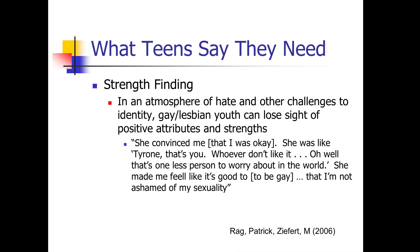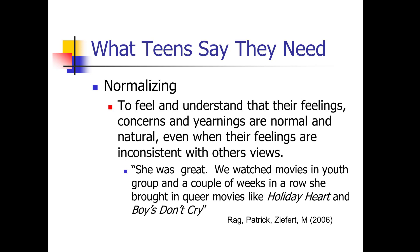Strength finding: in an atmosphere of hate and other challenges to identity, gay and lesbian youth can lose sight of positive attributes and strengths. One adolescent said: 'She convinced me that I was okay. She was like, Tyrone, that's you. Whoever don't like it — oh well, that's one less person to worry about in the world. She made me feel like it's good to be gay and that I'm not ashamed of my sexuality.' Normalizing: to feel understood that their feelings, concerns, and yearnings are normal and natural, even when inconsistent with others' views. One teen said: 'She was great. We watched movies in youth group and a couple of weeks in a row she brought in queer movies like Holiday Heart and Boys Don't Cry.'